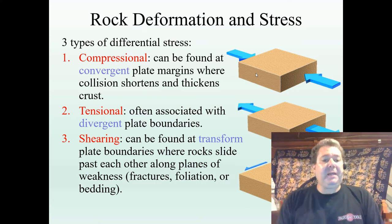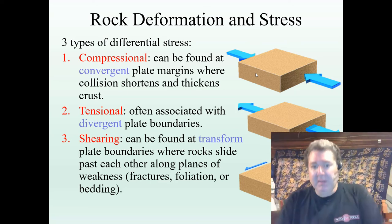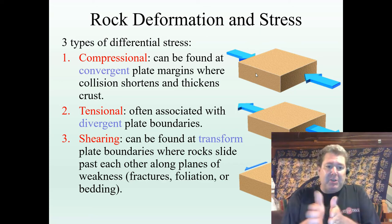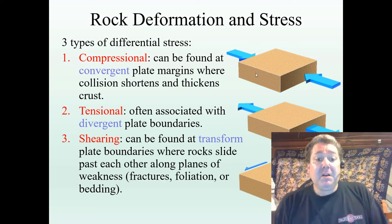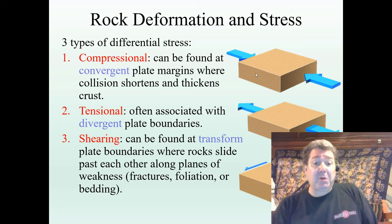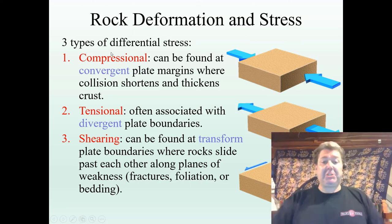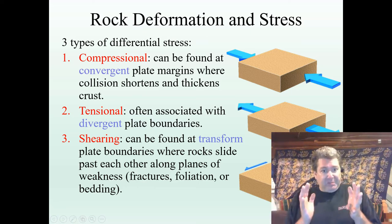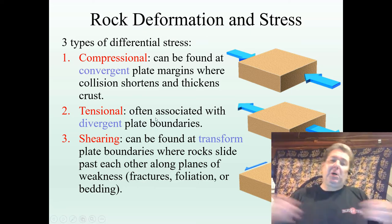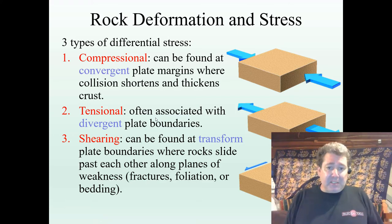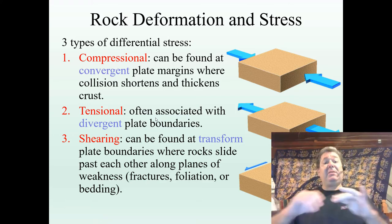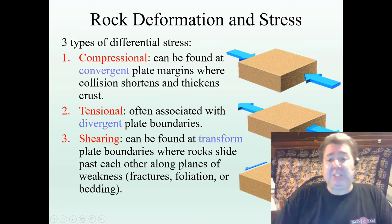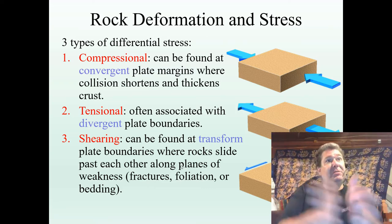The third kind is shearing — like scissors, moving or sliding past. This is what we find at transform plate boundaries, where the rocks slide past each other. The most famous transform boundary on the planet is the San Andreas Fault in California. To summarize: compressional pushes together — not enough space, things shorten and thicken. Tensional pulls apart at divergent boundaries — too much space, things lengthen and thin. And shearing at transform boundaries accommodates solid rock trying to move in two different directions at once.